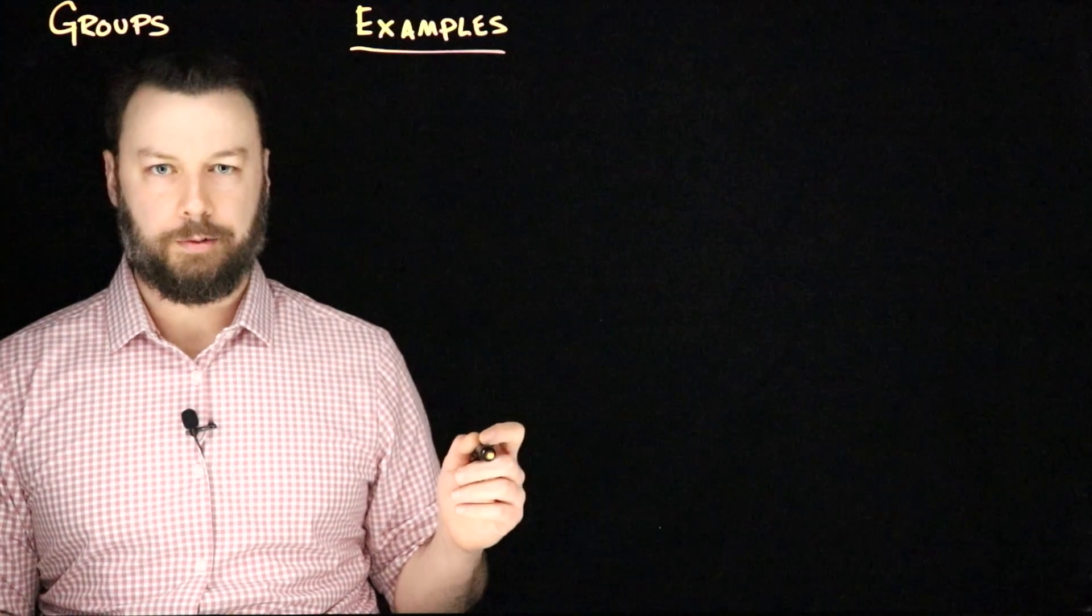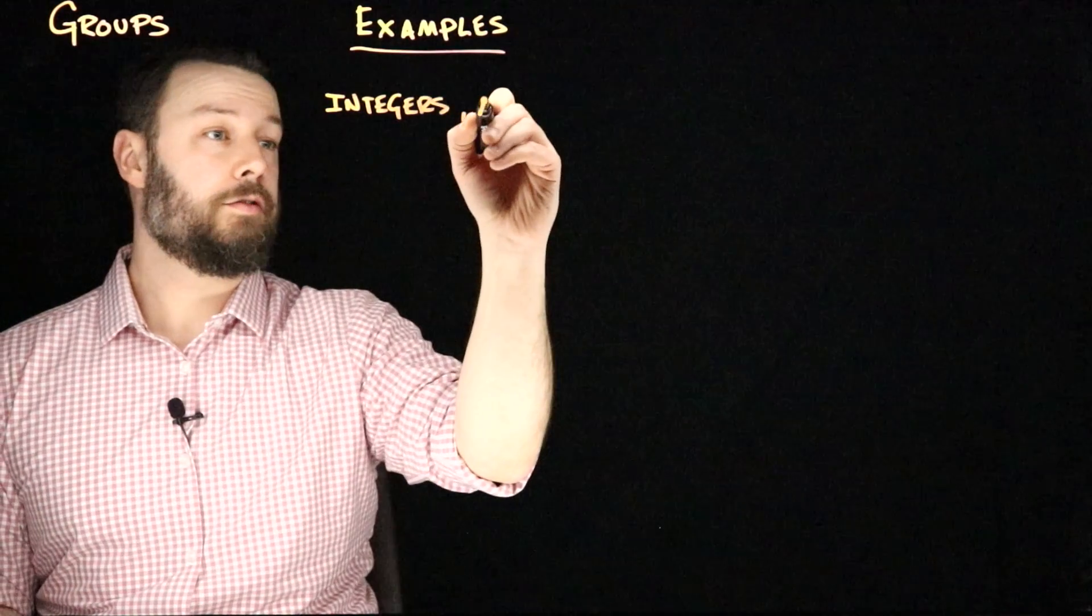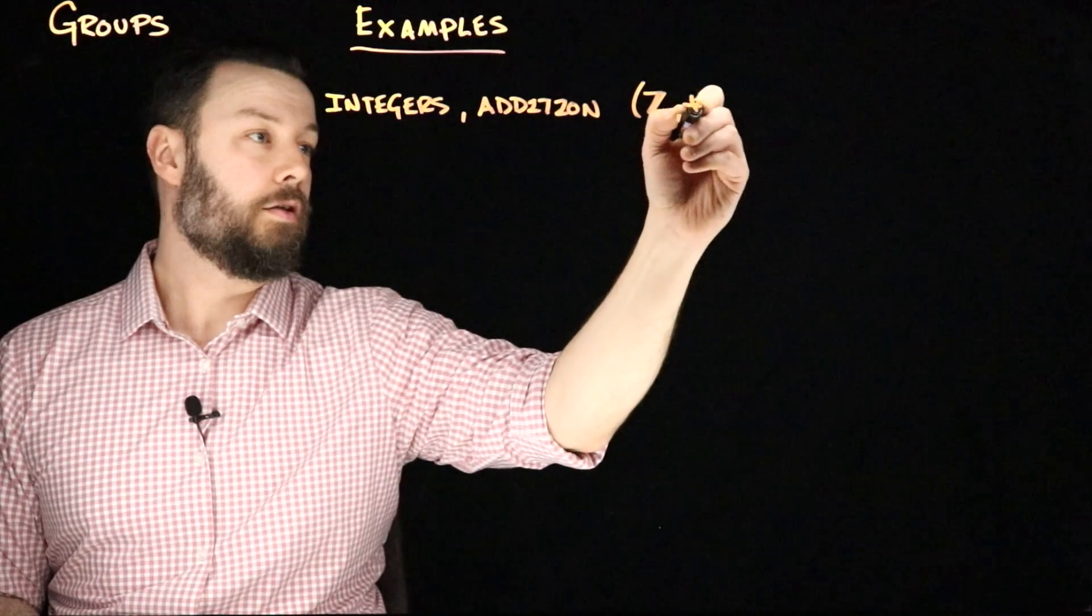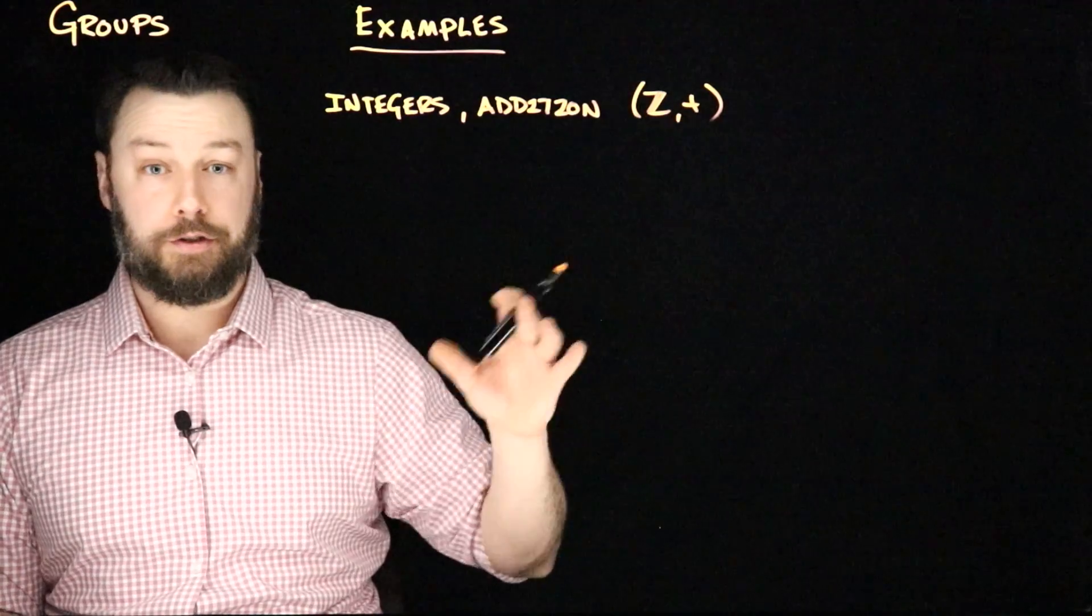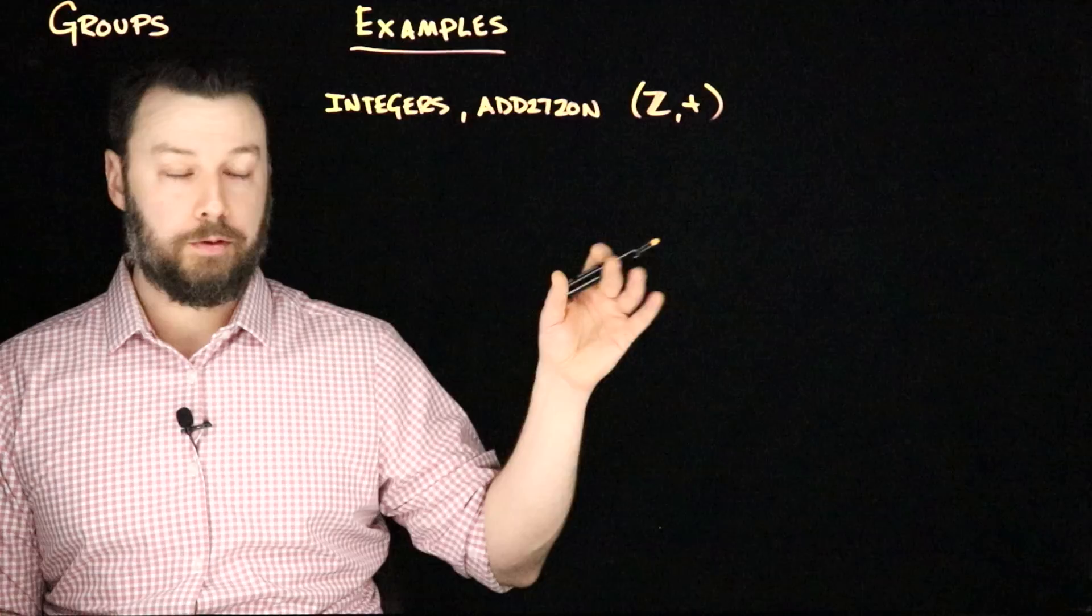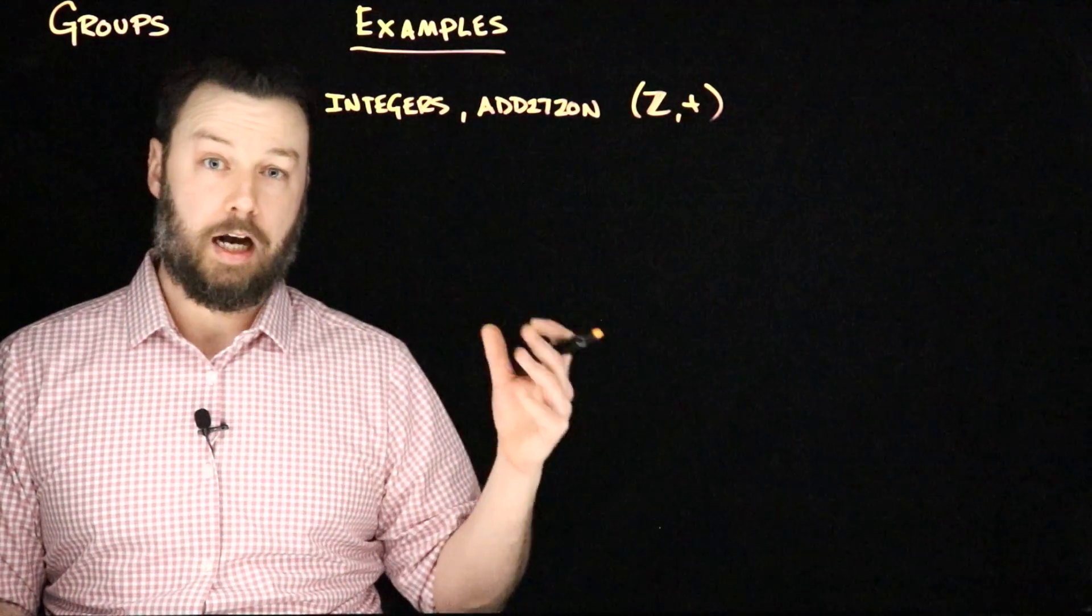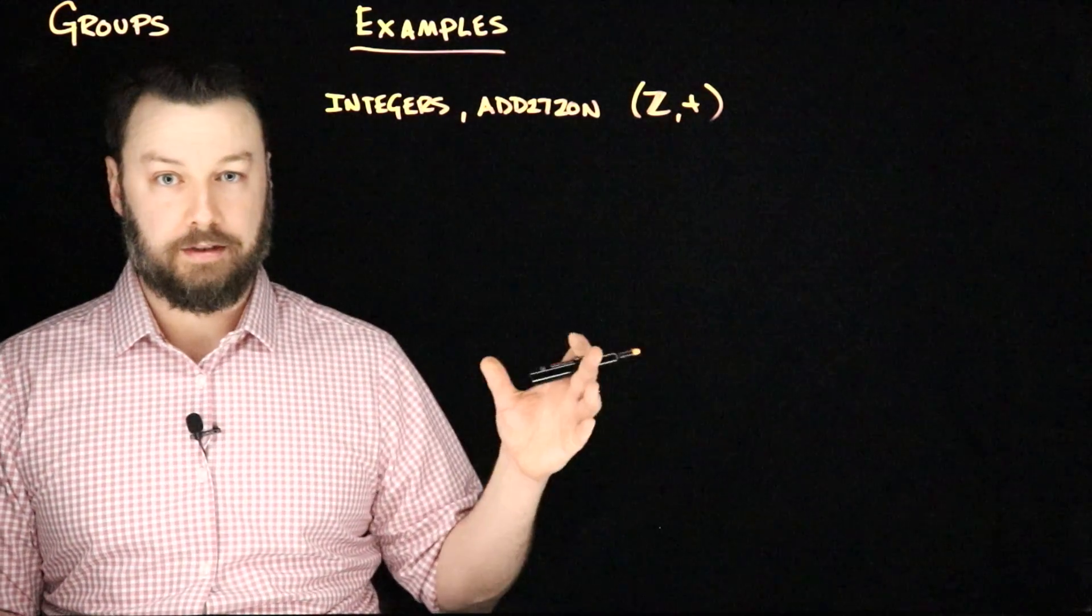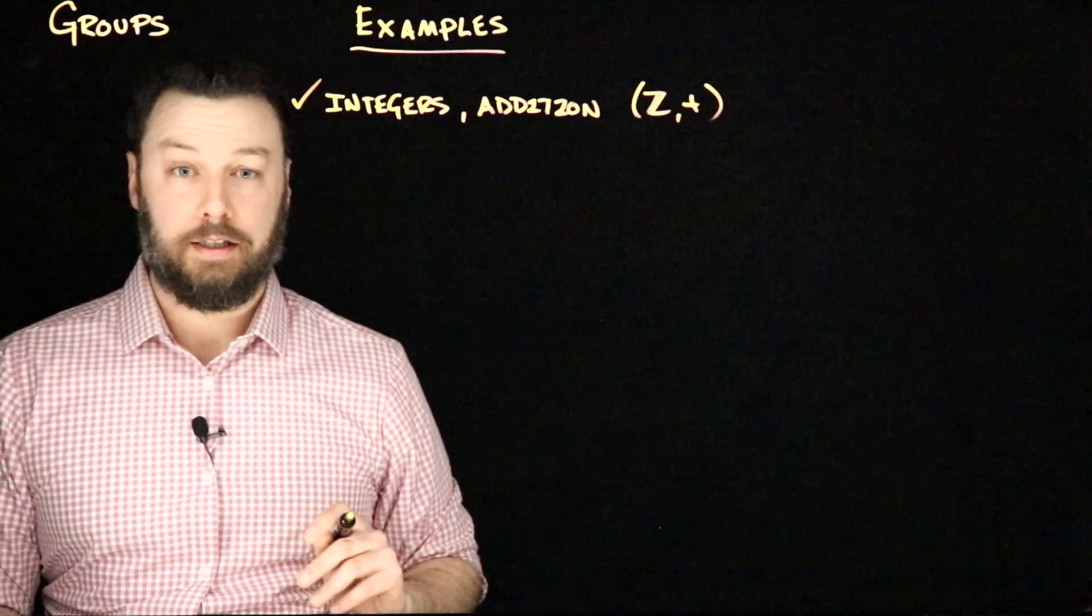Let's talk through a couple of examples. A first example might be integers and addition. So we might write that as Z for the integers and plus for the addition operator. You can see this as a group because if I add two integers, I get another integer. It has a neutral element, that is zero. If I add zero to an integer, I get that integer back. And it has an inverse element for every member, that is the opposite of whatever integer you have in hand. So if I have five, then its opposite is negative five and that's its inverse. Add those and I get the neutral element zero. So that is a group.